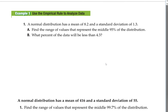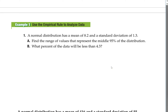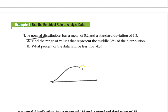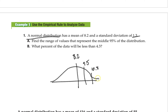Let's do a quick example using the empirical rule. The problem tells us it's a normal distribution — so I'll draw the curve. The mean is 8.2, right in the middle, and the standard deviation is 1.3. Adding 1.3 each time to the right: 9.5, 10.8, 12.1 — and it goes on forever. Subtracting 1.3 to the left: 6.9, 5.6, 4.3 — and it goes on forever that way too.